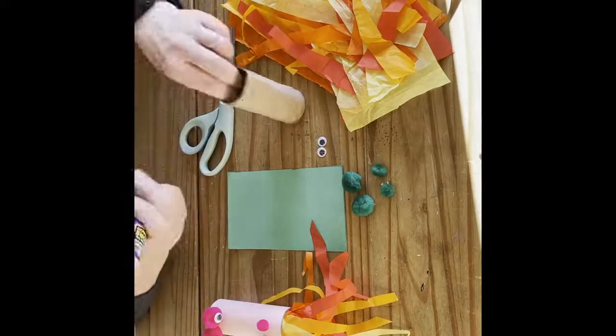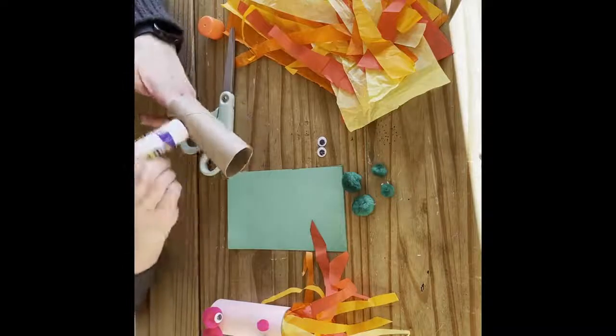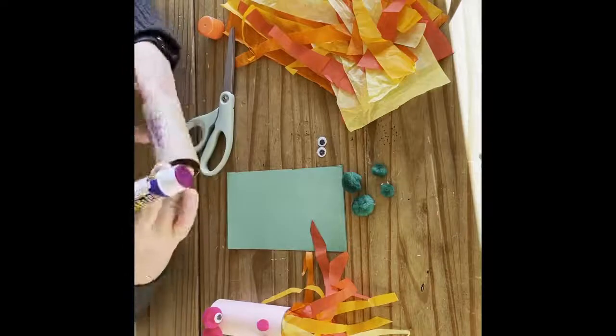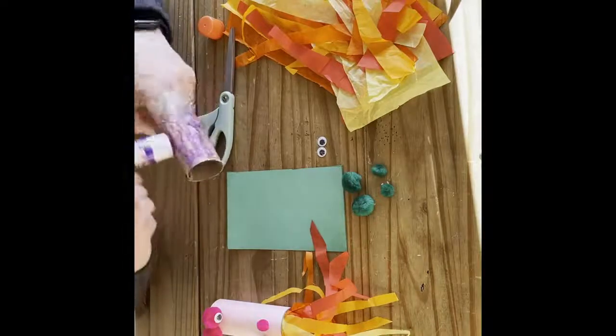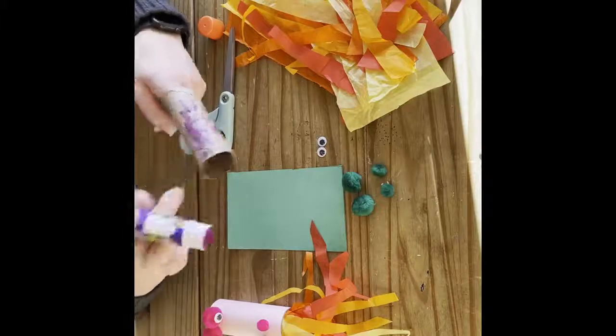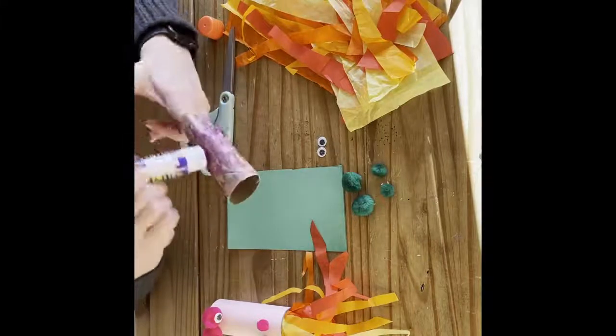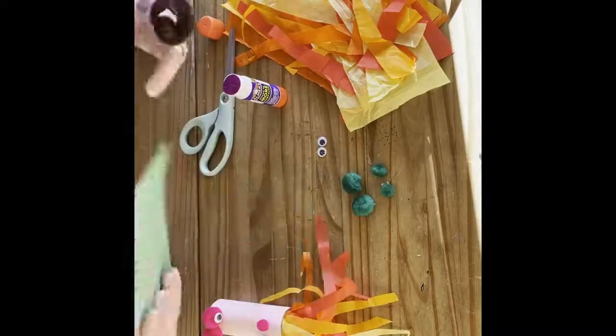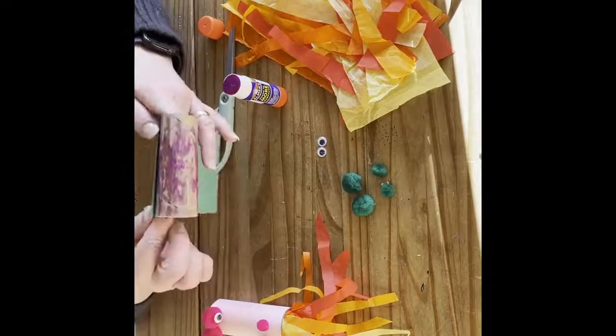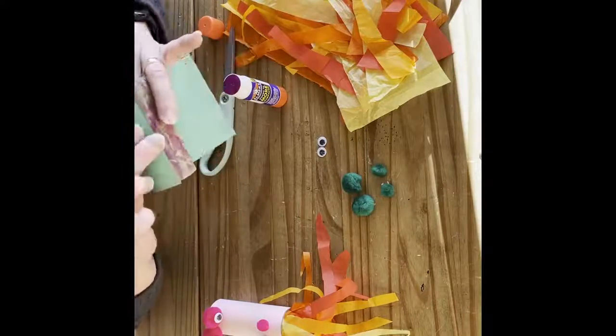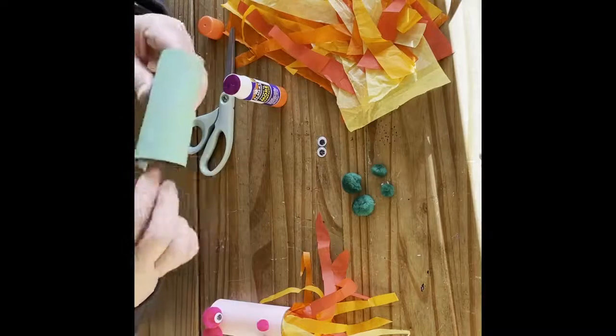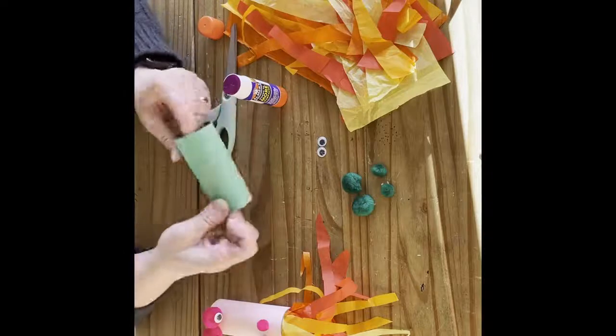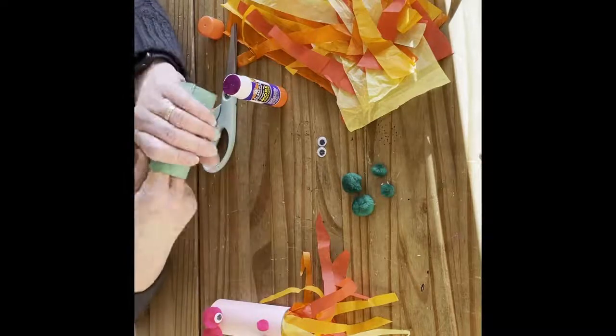First thing that we need to do is cover our toilet paper roll. Just take the glue stick and cover the whole toilet paper roll with it. And then cover it with the construction paper. Now, I just measured this construction paper out. I laid my toilet paper roll on top of it and measured the length of it on the edge, and then just cut a piece that would be long enough to cover the whole toilet paper roll.